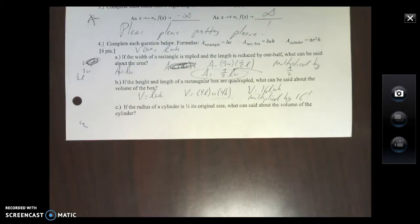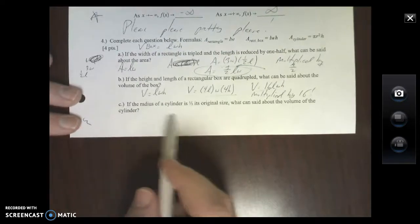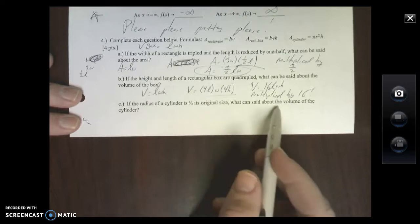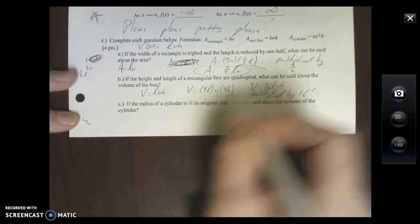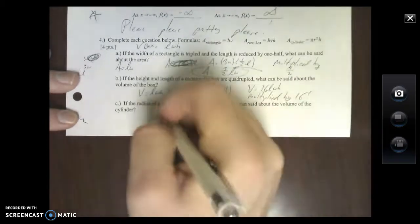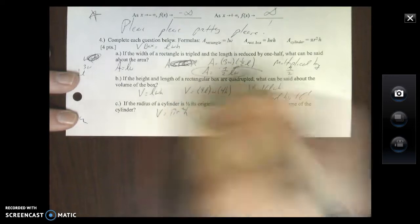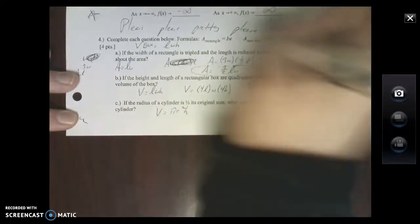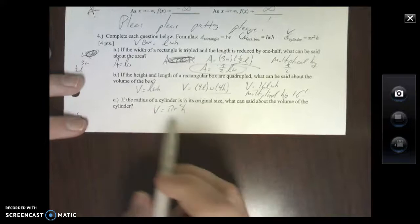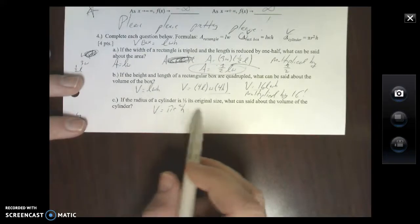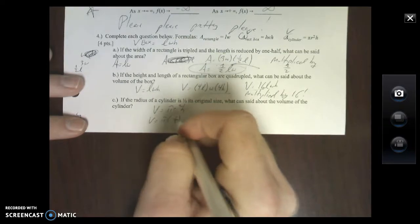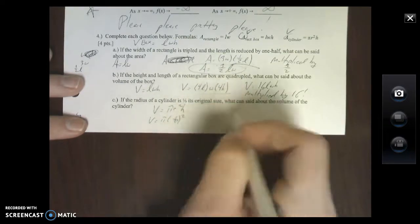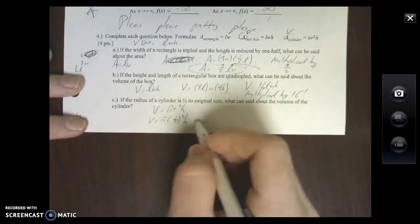Part C: if the radius of the cylinder is 1/3 its original size, what can we say about the volume of the cylinder? The volume of our cylinder is πr²h. If the radius of the cylinder is 1/3 its original size, I'm going back in here - π, my radius is turning into 1/3 r, and then here's my H. What can be said of the volume?